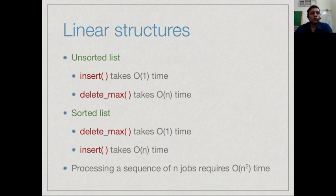Between an unsorted list and a sorted list, we have a trade-off. In an unsorted list, delete max takes linear time. In a sorted list, insert takes linear time. One or the other is a bottleneck. Whether we use an unsorted list or a sorted list, over a sequence of n jobs, supposing n jobs arrive in the system and we process them, then we will be inserting them n times and deleting max n times. Whichever solution we use among these two, we will end up spending order n square time.